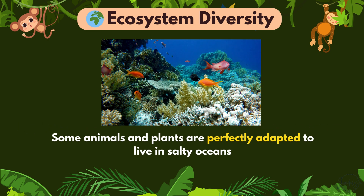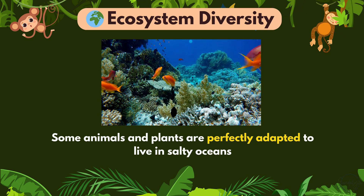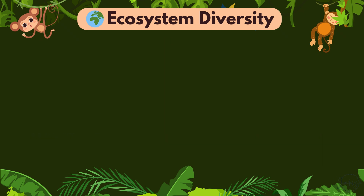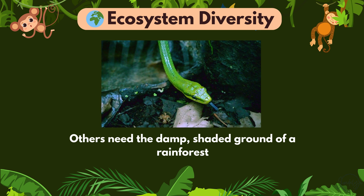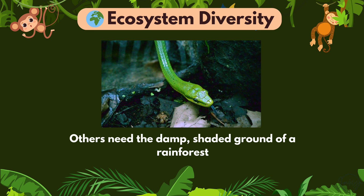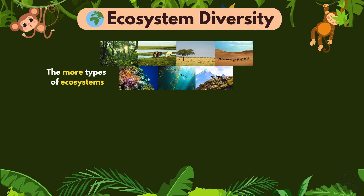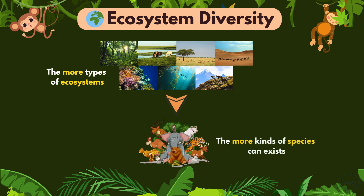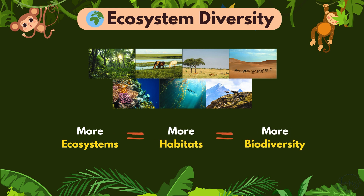Some animals and plants are perfectly adapted to live in salty oceans, while others need the damp, shaded ground of a rainforest. So the more types of ecosystems we have, the more kinds of species can exist. More ecosystems, more habitats, more biodiversity.